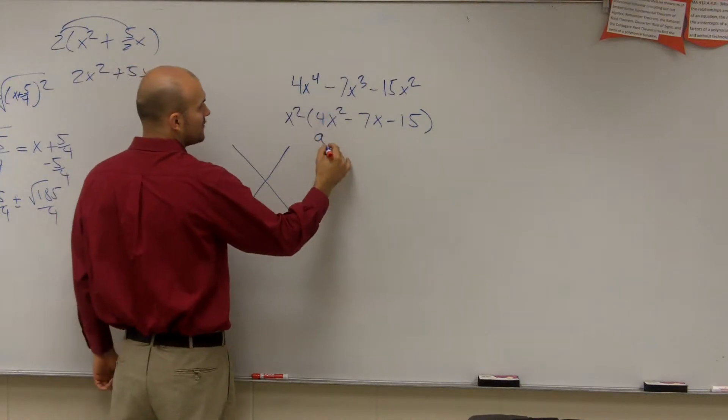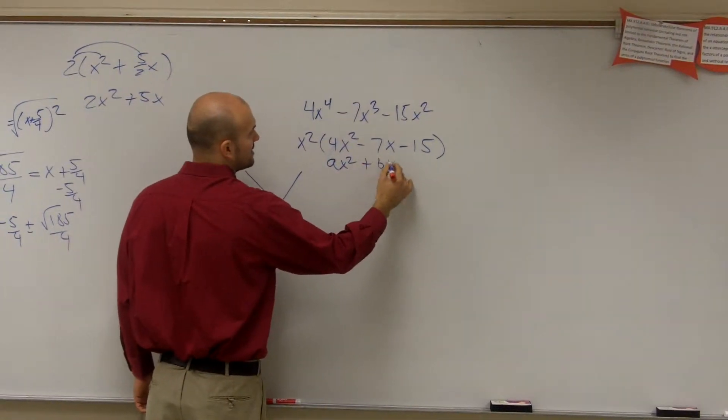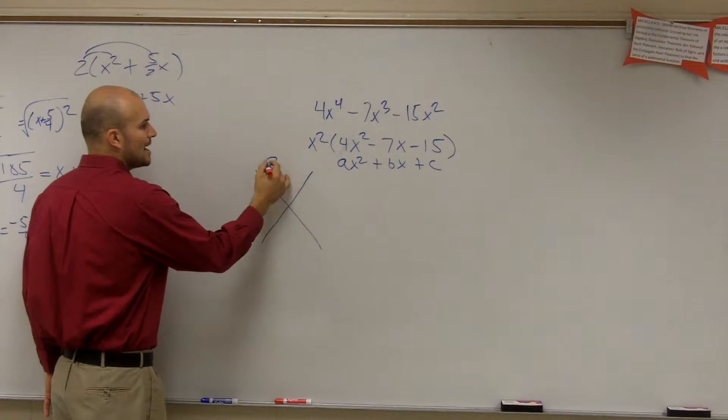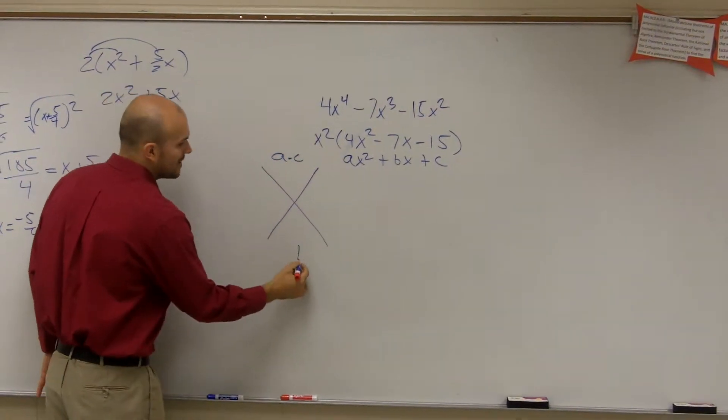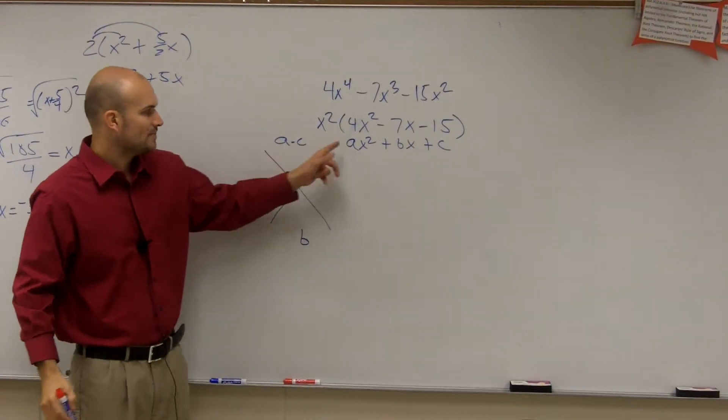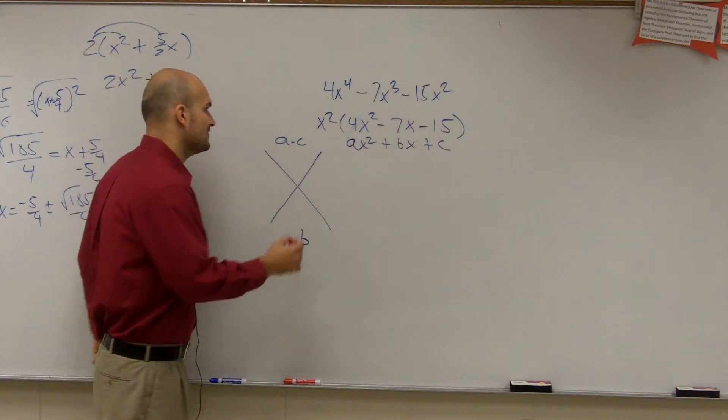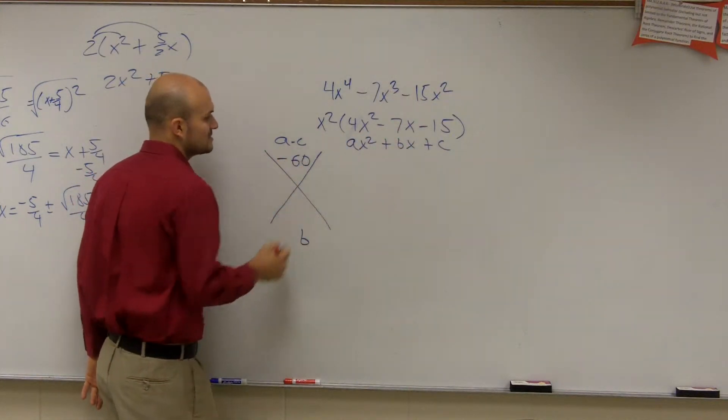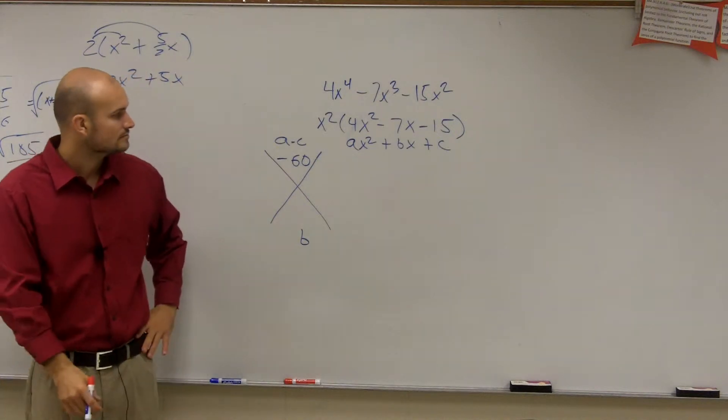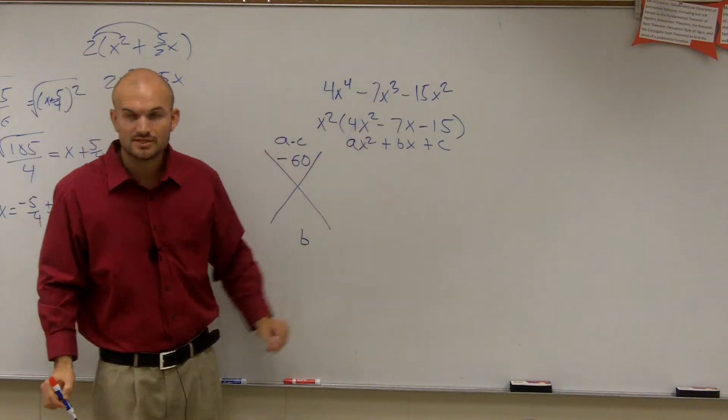This is in quadratic form, ax squared plus bx plus c. Up top, you do a times c. On the bottom, you do b. So you multiply a times c, 4 times negative 15, which is negative 60. Then you take your b, which is negative 7.